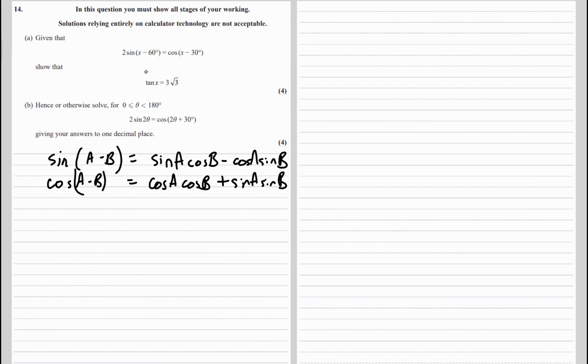So we're just going to substitute these in, so a is going to be x and b is 60.